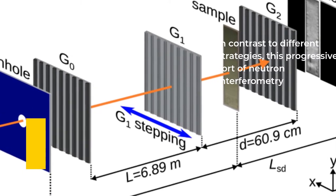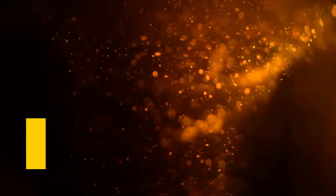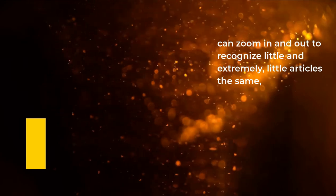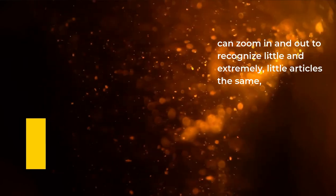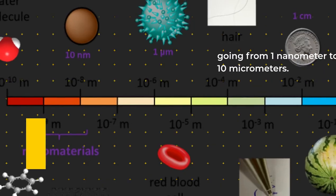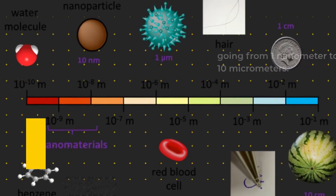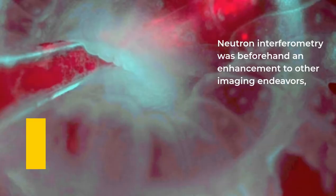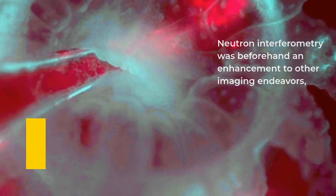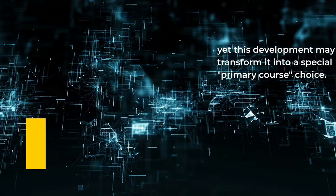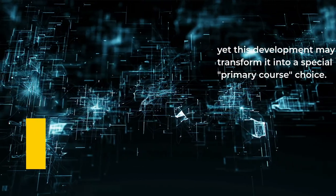Unlike other methods, this revolutionary type of neutron interferometry can zoom in and out to distinguish small and extremely small objects alike, ranging from 1 nanometer to 10 micrometers. Neutron interferometry was previously a complement to other imaging efforts, but this development may transform it into a unique primary course option.